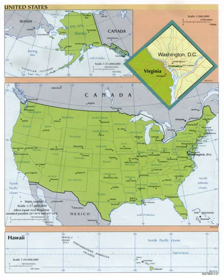Townships in many states are generally the product of the public land survey system. For more information, see Survey Township and Civil Township. There are approximately 30,000 incorporated cities in the United States, with varying degrees of self-rule.